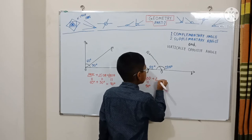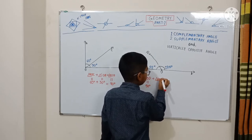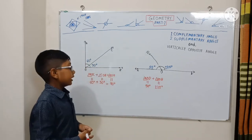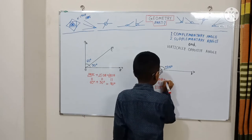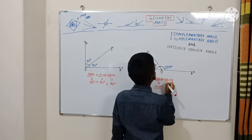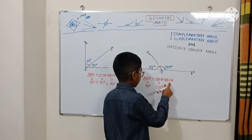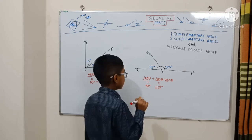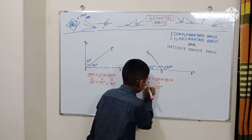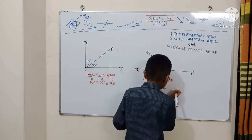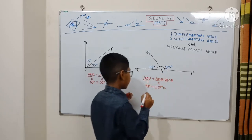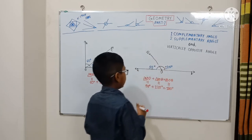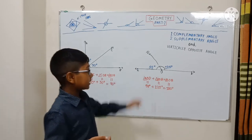Angle DOB is equal to 125 degrees. This equals angle AOB. The common arm is D. DOB and the last two angles — this one was 55 degrees. These combine to equal 180 degrees. So that's the end of adjacent angles — we now know about adjacent angles.